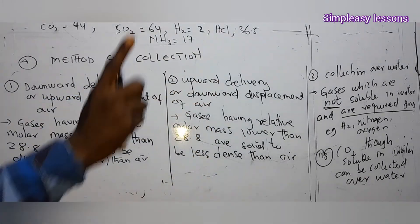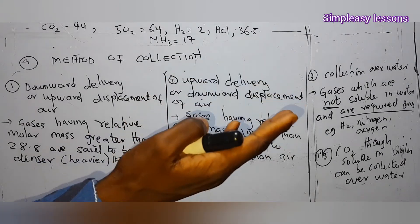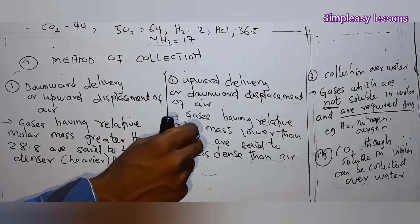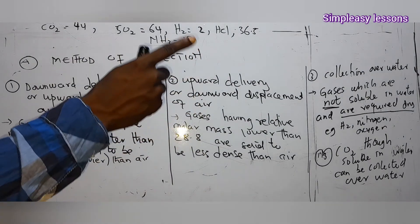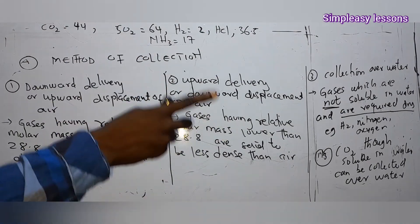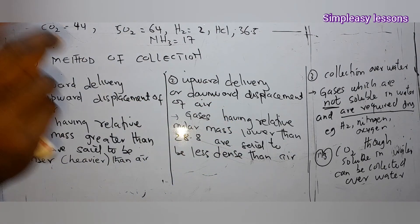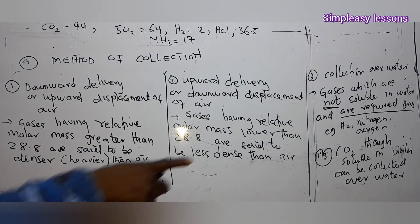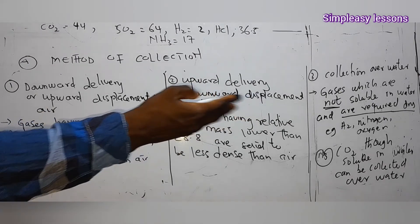We also have collection over water. Gases that are not soluble in water can be collected over water — they don't dissolve, so they can still pass through water and be collected. However, if a gas is soluble in water it will dissolve and you can't collect it. Note that carbon dioxide, even though it is slightly soluble in water, is still collected over water.